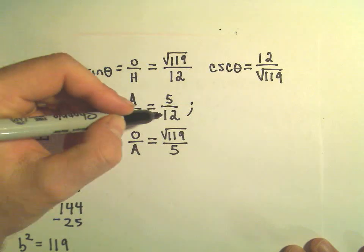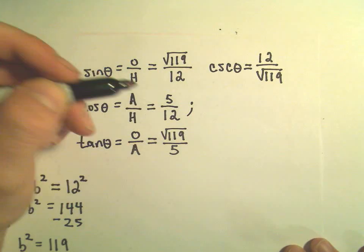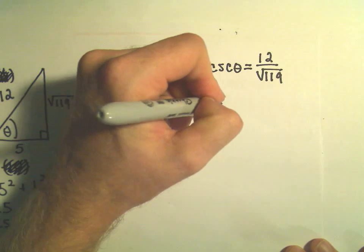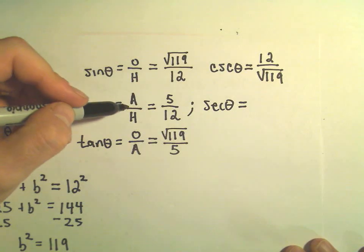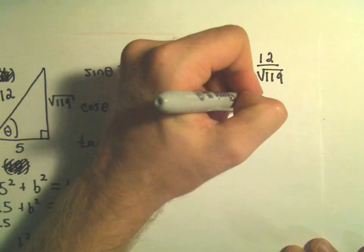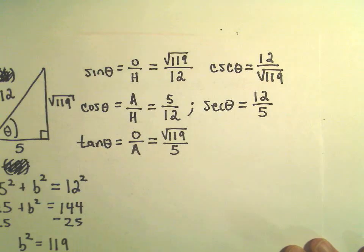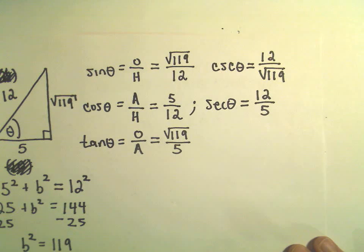Cosine of theta is 5 over 12. So that means secant of theta, which is 1 over cosine, or equivalently, the hypotenuse over the adjacent. We'll just flip that fraction as well. That'll give us our value for secant of theta.